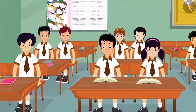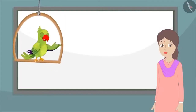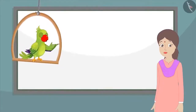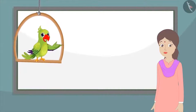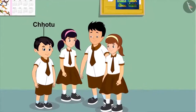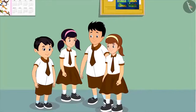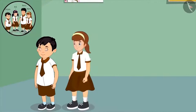Today Chotu's class is going for a picnic, and Chotu's teacher asks all the children to stand in groups of four. Then she asks the four children to stand in a line in small to large order based on their height. Chotu and his three other friends — Aarti, Neha, and Sonu — begin to stand in a line. Being the shortest among all four children, Chotu stands in front. Neha, who is taller than him but shorter than the rest, stands behind him.